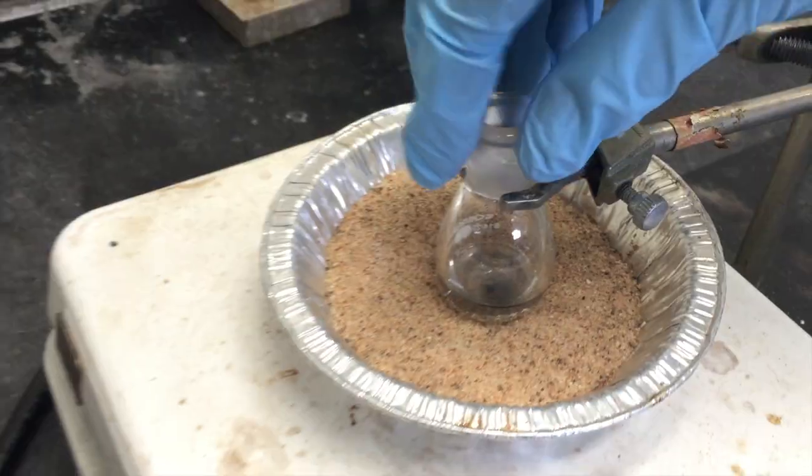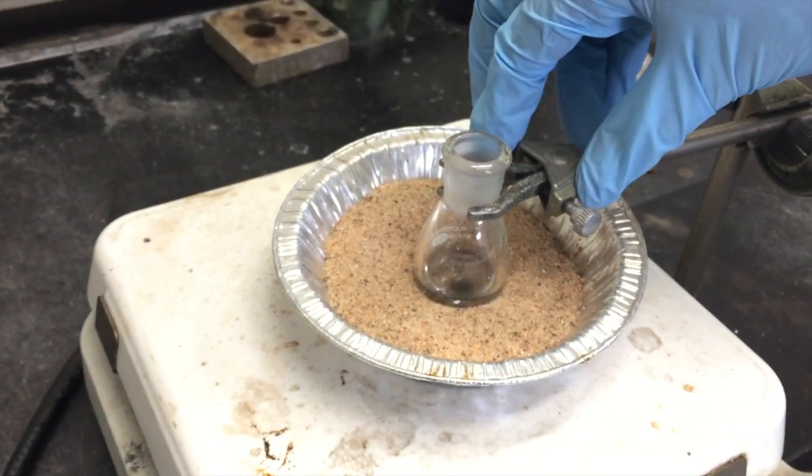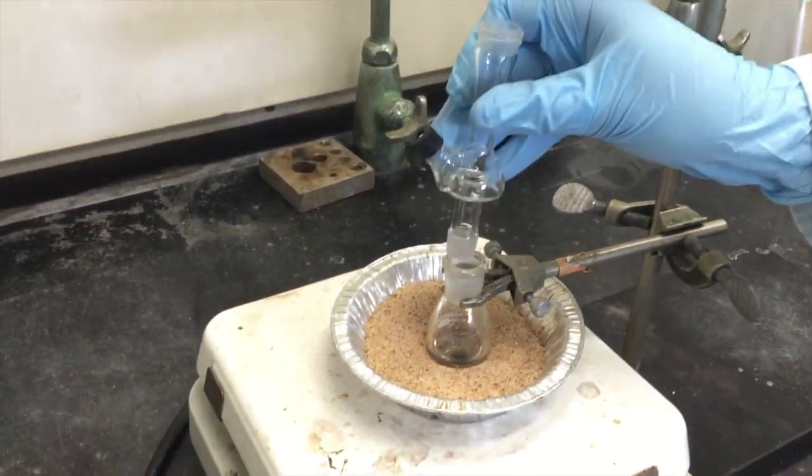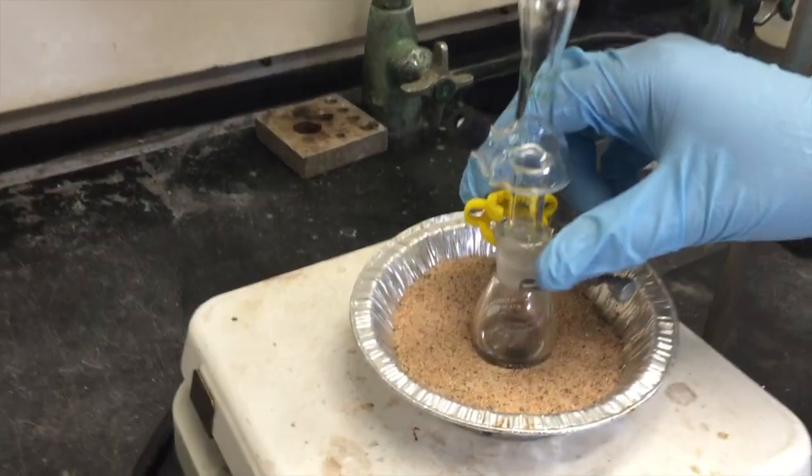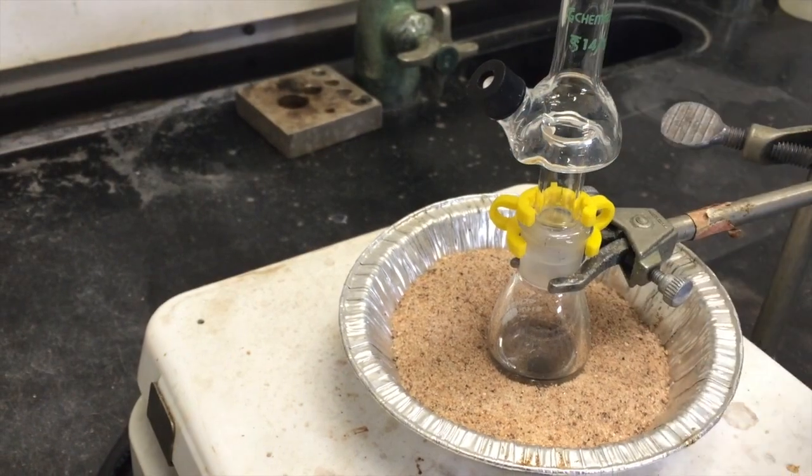Jiggle the flask into the sand for more efficient heating. Insert the Hickman still into the round bottom flask and clamp it in place. The Hickman still will act as the condenser.